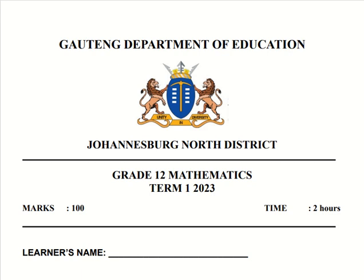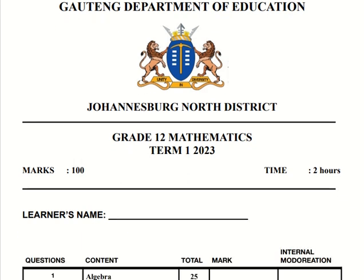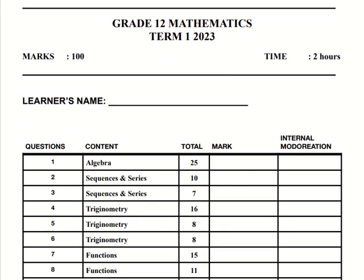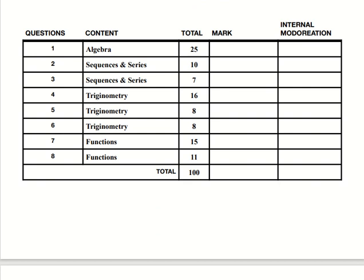The paper is set by the Houten Department of Education, which is a joint aspect district, and it's the control test for term one 2023. It was two hours, a hundred marks. The nice thing is that learners were answering on the paper.